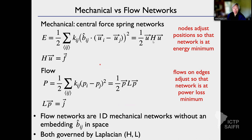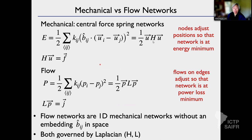Flow networks do the same thing — I'll call that flow allostery. Brain vasculature is doing this right now in all of us: blood comes into the arteries of the brain vasculature, which is a network of vessels, and depending on what you're doing you'll need more blood flow to specific regions to support that brain function. The brain contracts some vessels and dilates others, changing the conductivity of individual edges of this network in response to a source pressure drop at the arteries to deliver a target pressure drop to the desired region — for example, my speech cortex gets more oxygen because I'm talking.